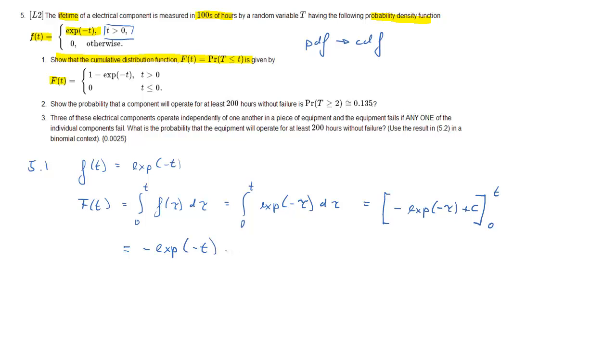Next we need to substitute 0 and t in here, so first negative exponential of negative t minus negative exponential of negative 0. Of course we need to understand what the exponential function does.